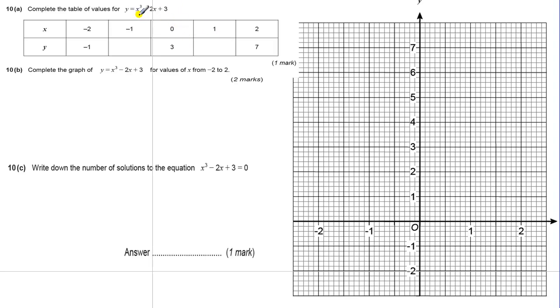So be careful there. To work out the first value 1, x equals 1, we've got 1 cubed, which is 1, minus 2 lots of 1, which is minus 2, plus 3. So we've got 1, take away 2, which is minus 1, plus 3 is 2.